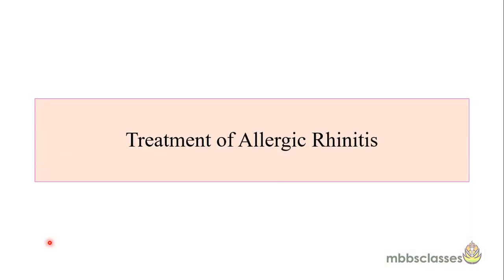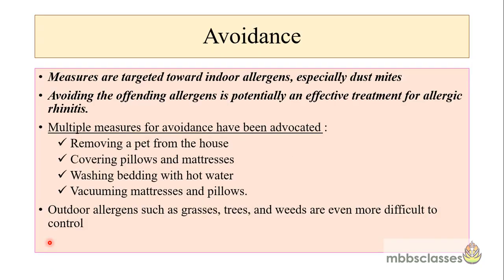Now let's come to the treatment of allergic rhinitis. Treatment begins with avoidance, teaching the patient to avoid the allergens, and the measures are targeted mainly towards indoor allergens especially dust mites, because avoiding the offending allergens is potentially an effective method. Advice which must be given includes removing a pet from the house, covering pillows and mattresses, regular washing of bedding with hot water, and vacuuming mattresses and pillows. By following these measures, it helps in reducing the burden of indoor allergens, but outdoor allergens like grasses and weeds are more difficult to control.